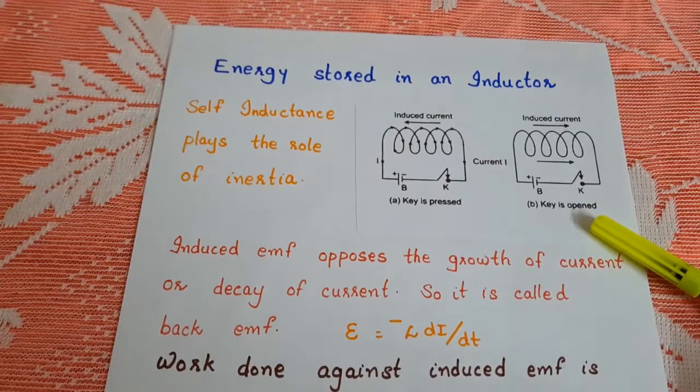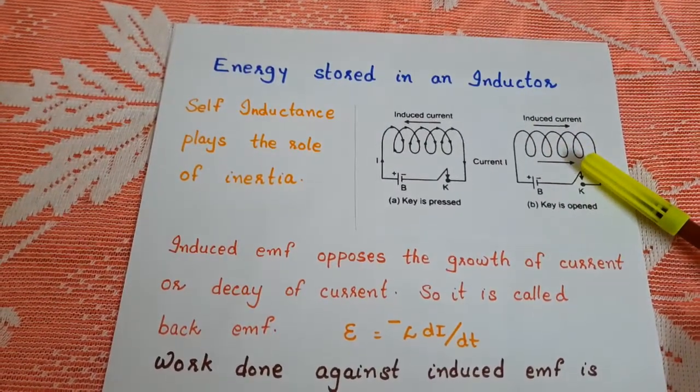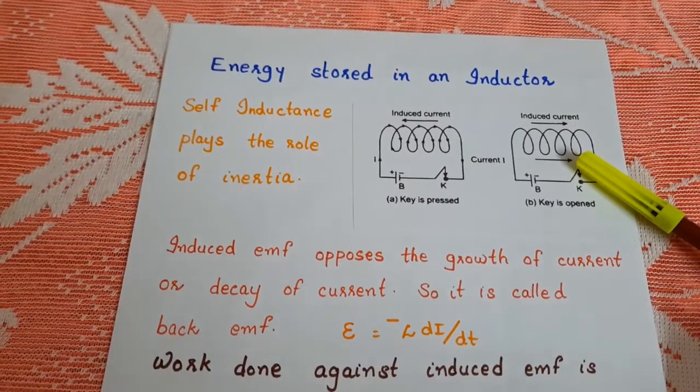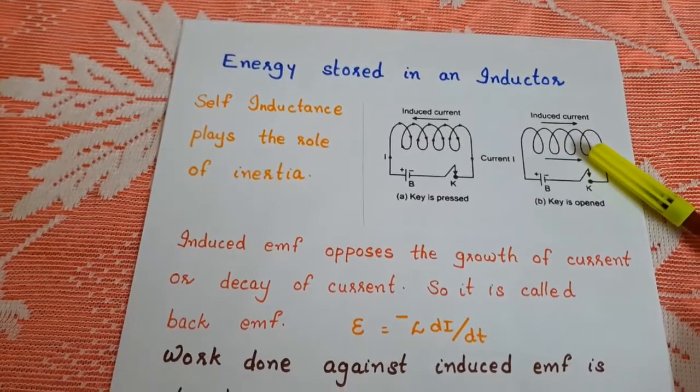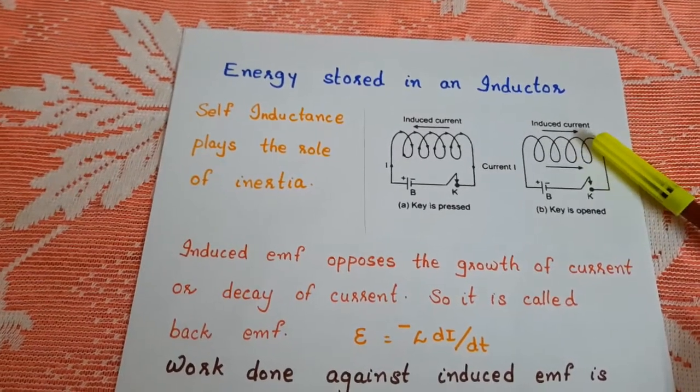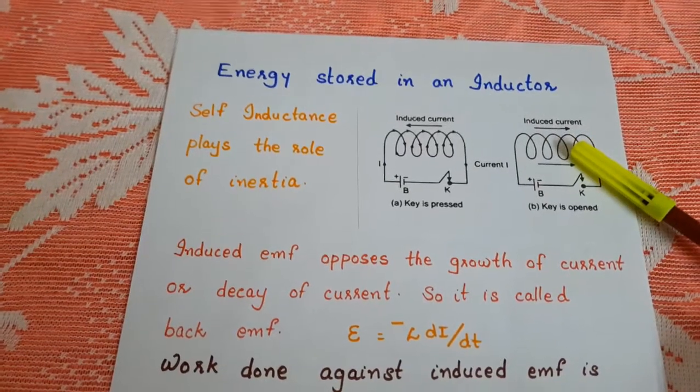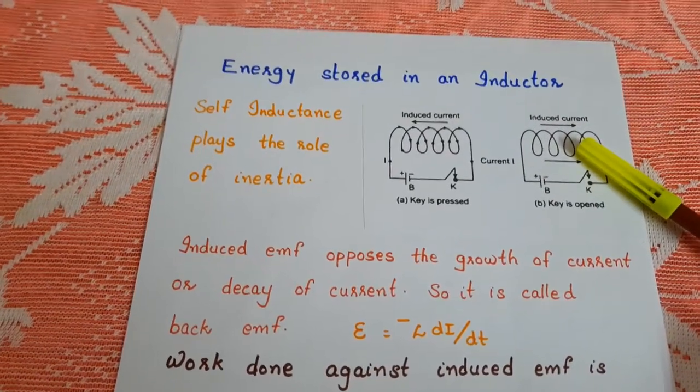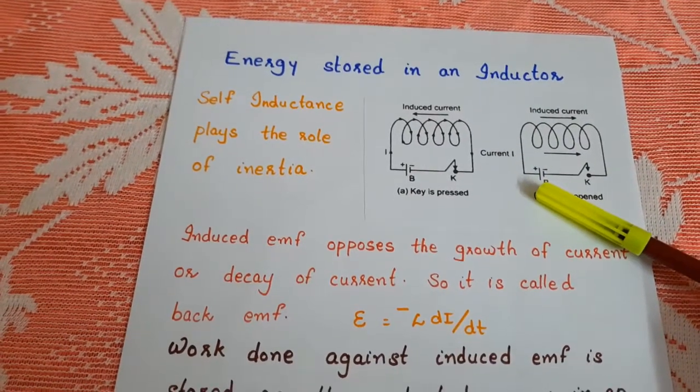When the key is opened, current through the coil gradually decreases. The decreasing current produces a decreasing magnetic flux, which induces a current. And in this case, the induced current will be in the same direction as that of the current from the cell.